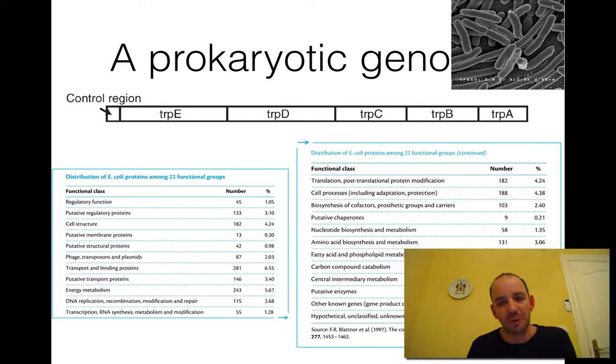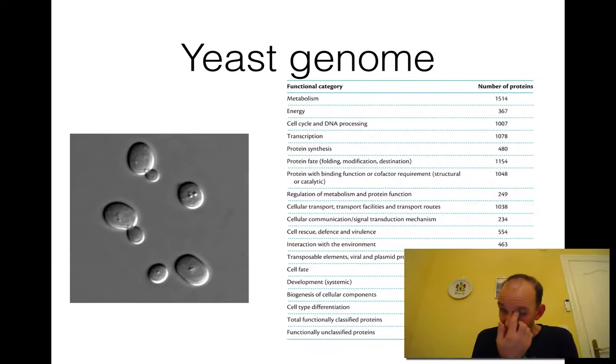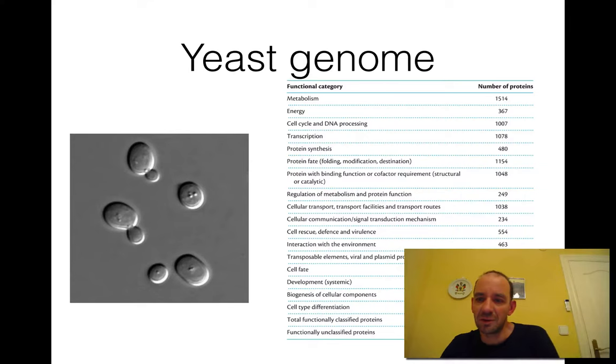If you move up to yeast, which is not so much bigger, it's about 6,000 instead of 4,000 genes. But you have many more genes involved in cellular transport and transport mechanisms. Also, more genes involved in protein fate, protein modification, and destination. You have chaperones and more structural genes because the cells are much bigger. So you need to have cellular structures. The number of genes are actually not so different from E. coli, but they are focused on slightly different things.